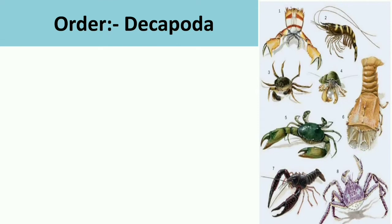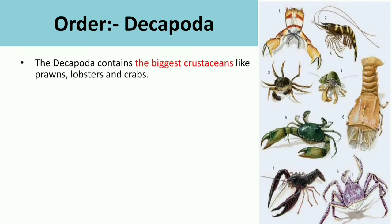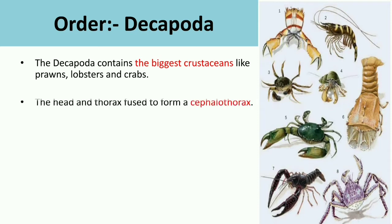Decapoda contains the biggest crustaceans like prawn, lobster, and crab. The head region and the thorax region are both fused to form the cephalothorax. This fused cephalothorax is a key feature we see in Decapoda.